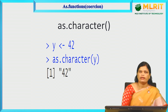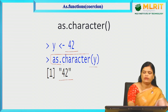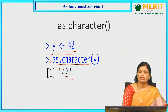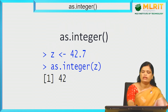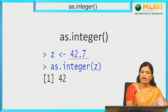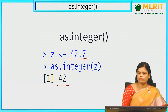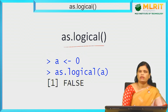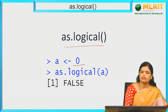as.character — here you are assigning a numeric value 42 to y, and that y value will be converted into a string. The as.character function converts whatever value is assigned to it into a string. as.integer — you assign a float value to z, and as.integer will convert that float value into an integer. as.logical will convert a value into true or false — as we have assigned 0, it will be converted into false.